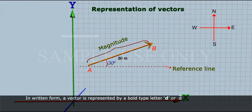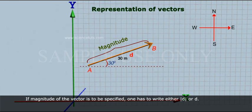In written form, a vector is represented by a bold type letter D or D bar. If the magnitude of the vector is to be specified, one has to write either the modulus of vector D or |D|.